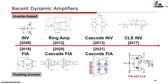Recently, people are increasingly using dynamic amplifiers for residue amplifier implementations, like inverter-based amplifiers, ring amplifiers, and floating inverter amplifiers (FIA). In the course, we will discuss how the ring amplifier works and how to design the amplifier with a reliable dead zone. We will also discuss FIA — the floating inverter amplifier — and its pros and cons.